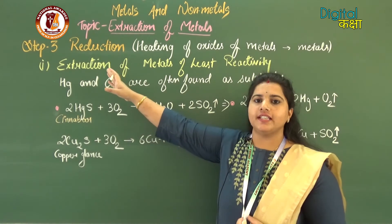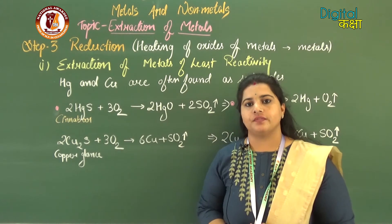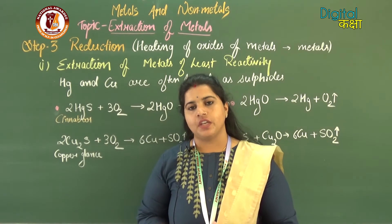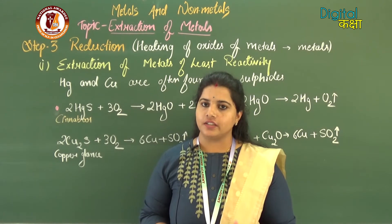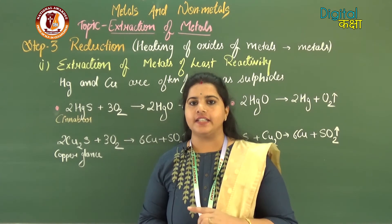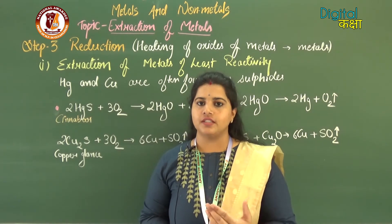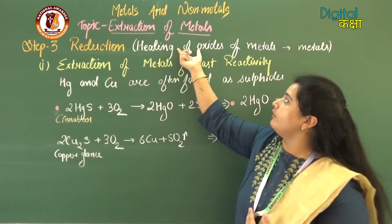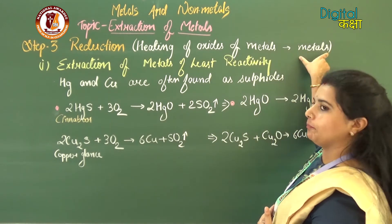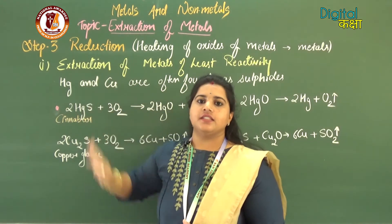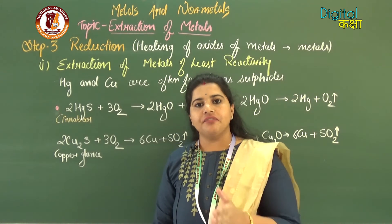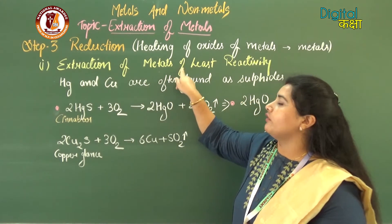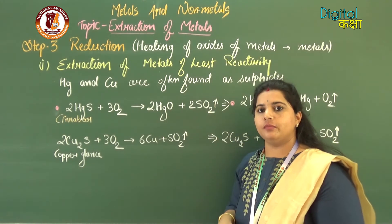After Step 2 we proceed to Step 3: reduction. Reduction is the addition of hydrogen or simply the removal of oxygen. We have converted ores to oxides in Step 2; now we must remove oxygen from metal oxides. Reduction involves heating metal oxides to convert them into pure metal. Different elements in the reactivity series require different processes of reduction.